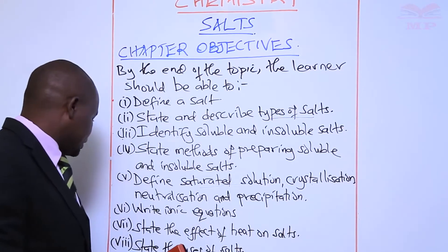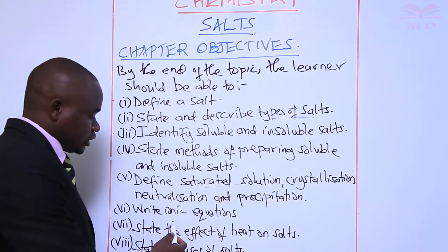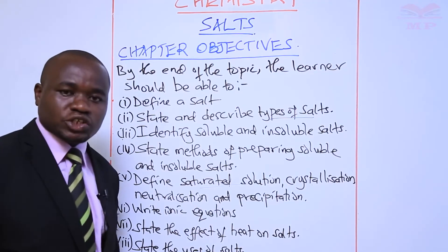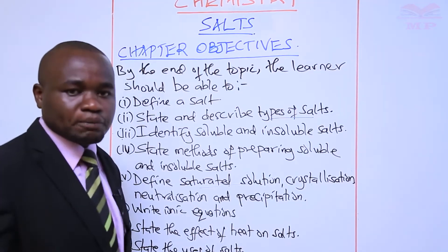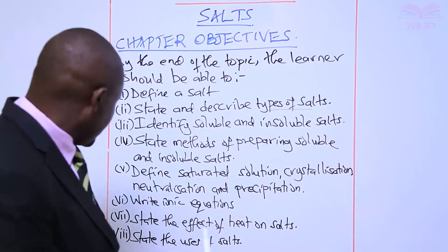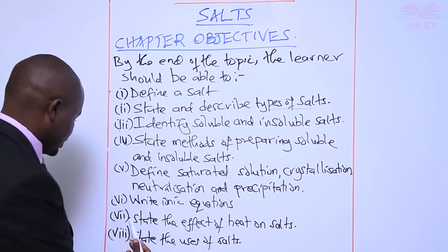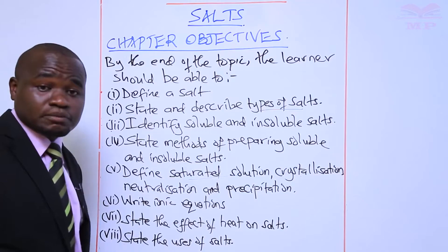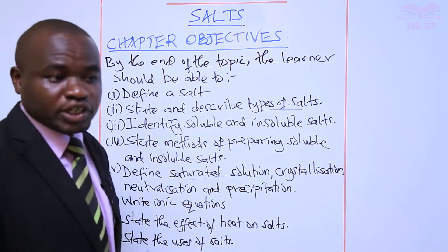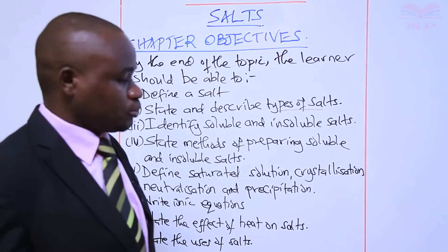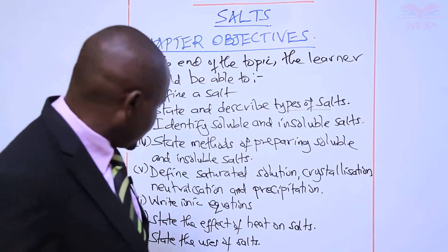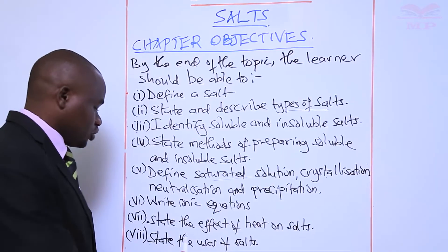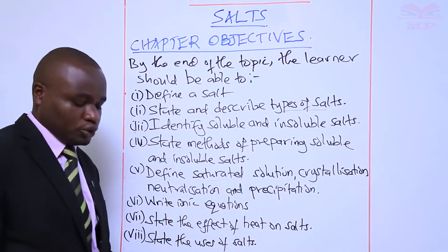Number five also includes neutralization as well as precipitation. Number six, you should be able to write ionic equations — we are going to write ionic equations using precipitation reactions. Number seven, you should be able to state the effect of heat on salts, since salts behave differently when they are decomposed by heat. And lastly, you should be able to state uses of salts.